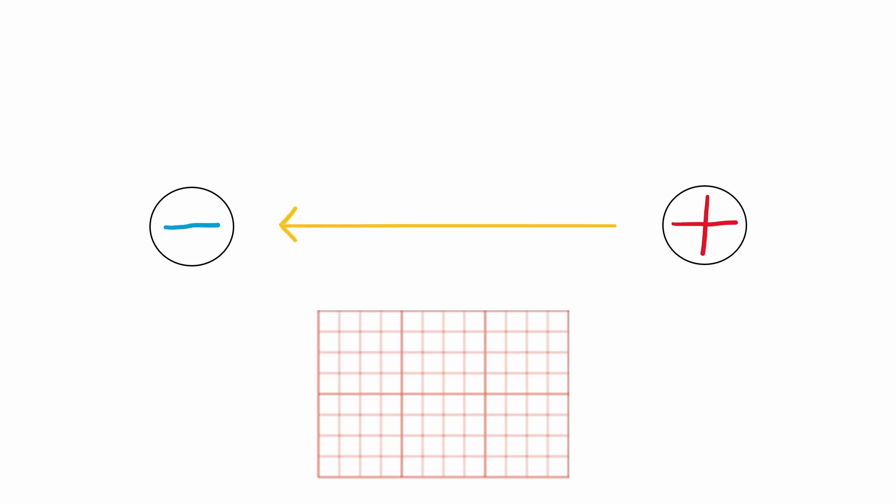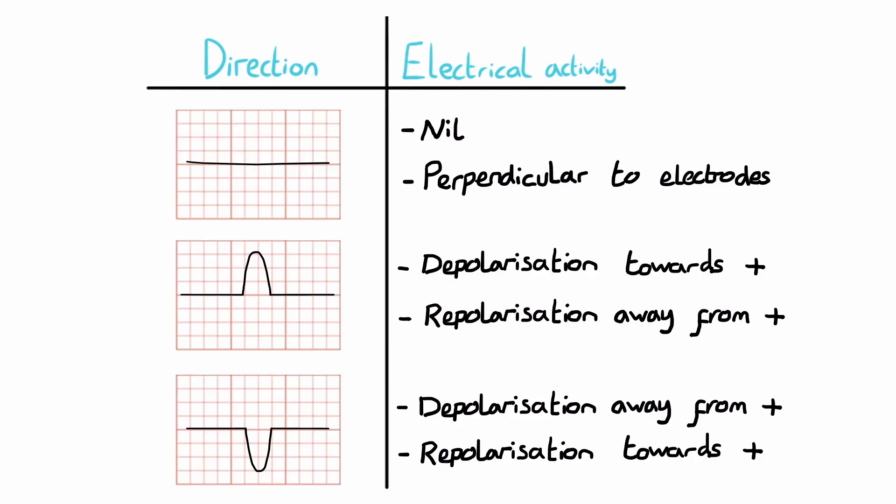Similarly, a wave of depolarization moving from positive to negative will cause a downwards deflection on the ECG, as will a wave of repolarization moving from negative to positive. Where the ECG wave follows the isoelectric line, i.e. it remains flat, it either means there's no electrical activity between the two electrodes or that the direction of electricity is perpendicular to the electrodes.